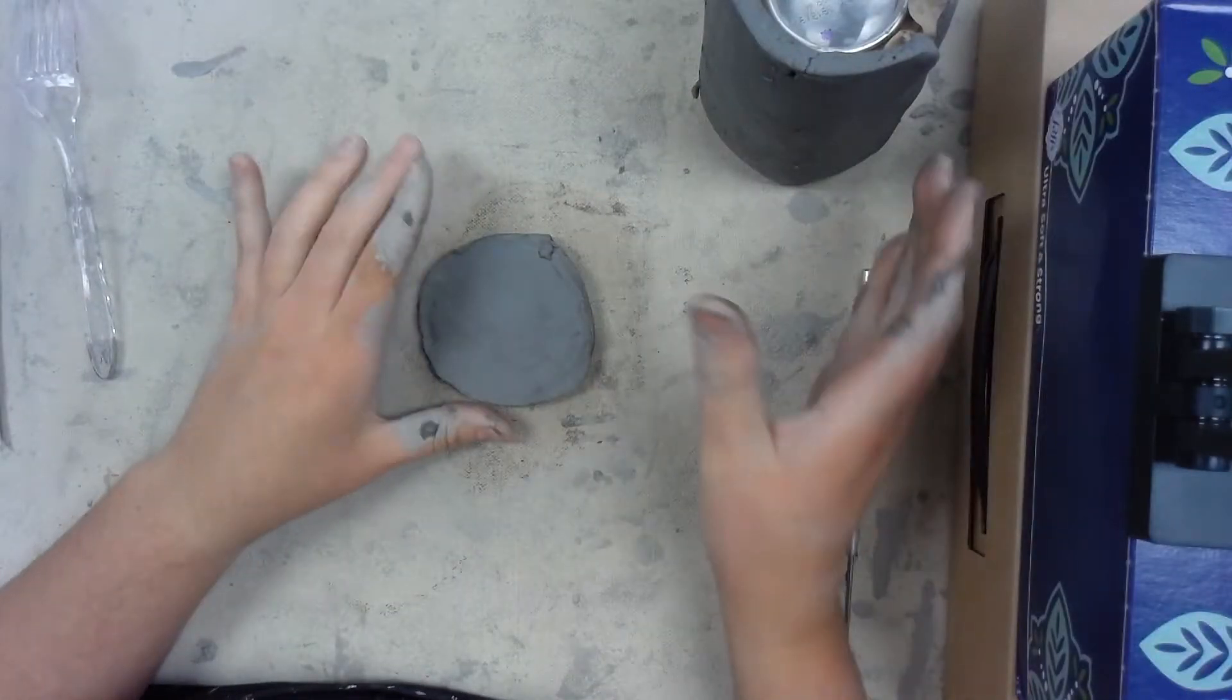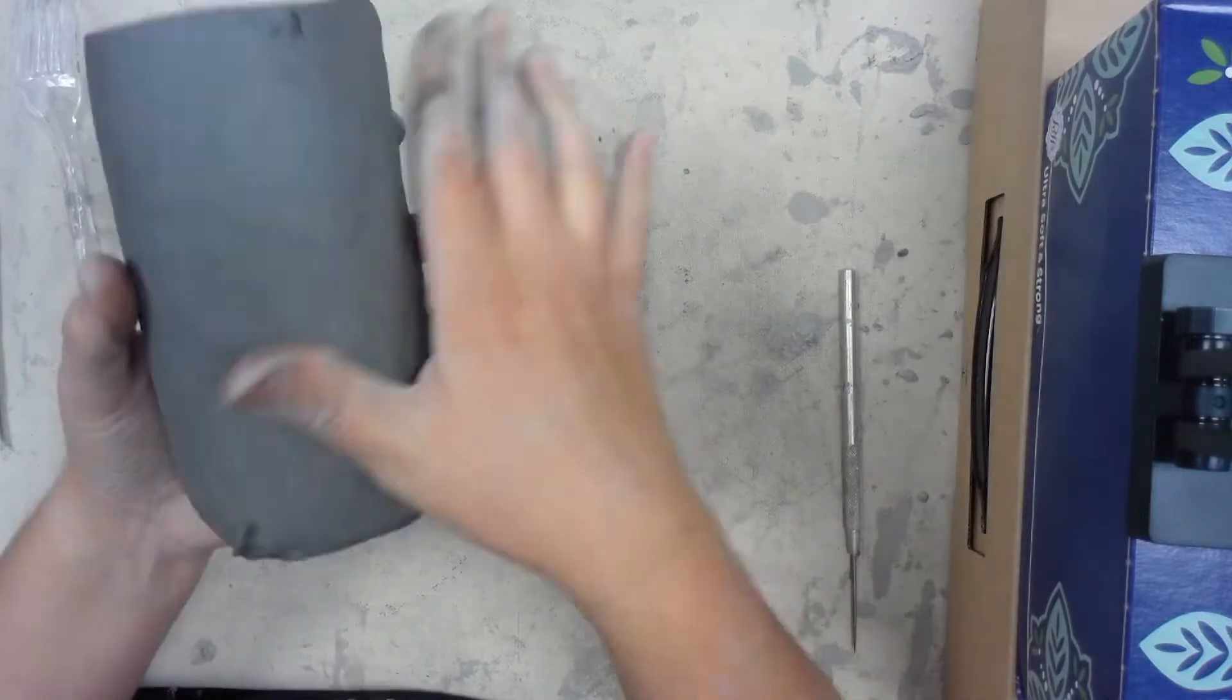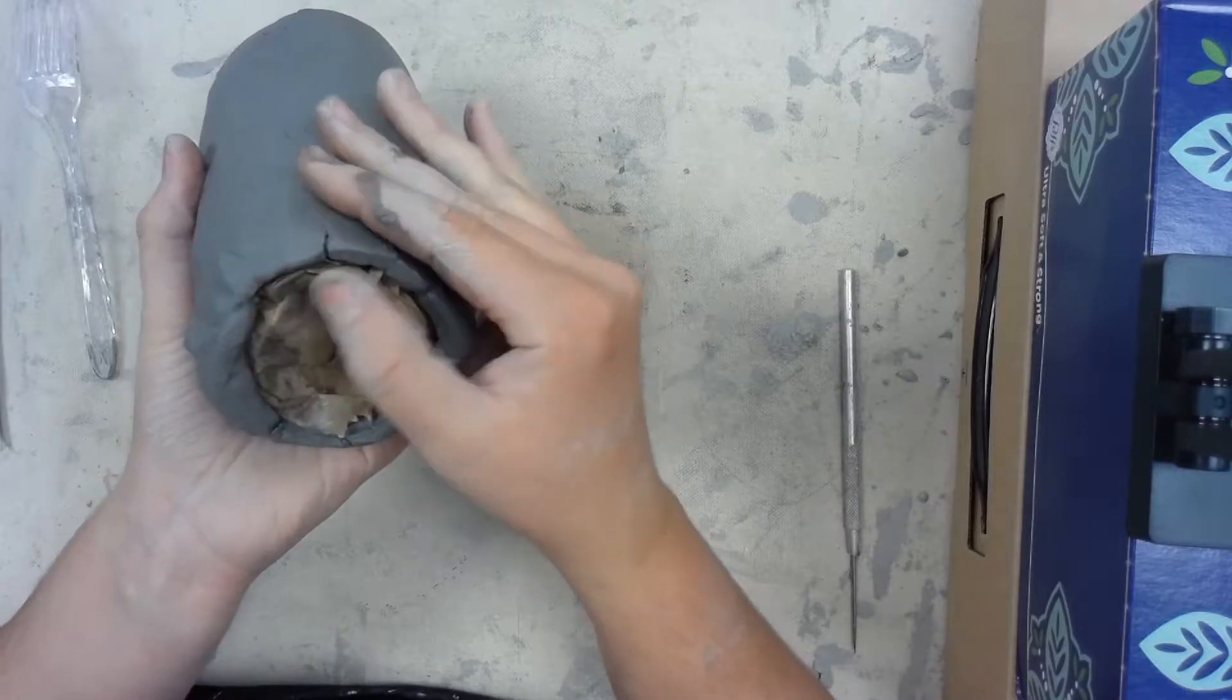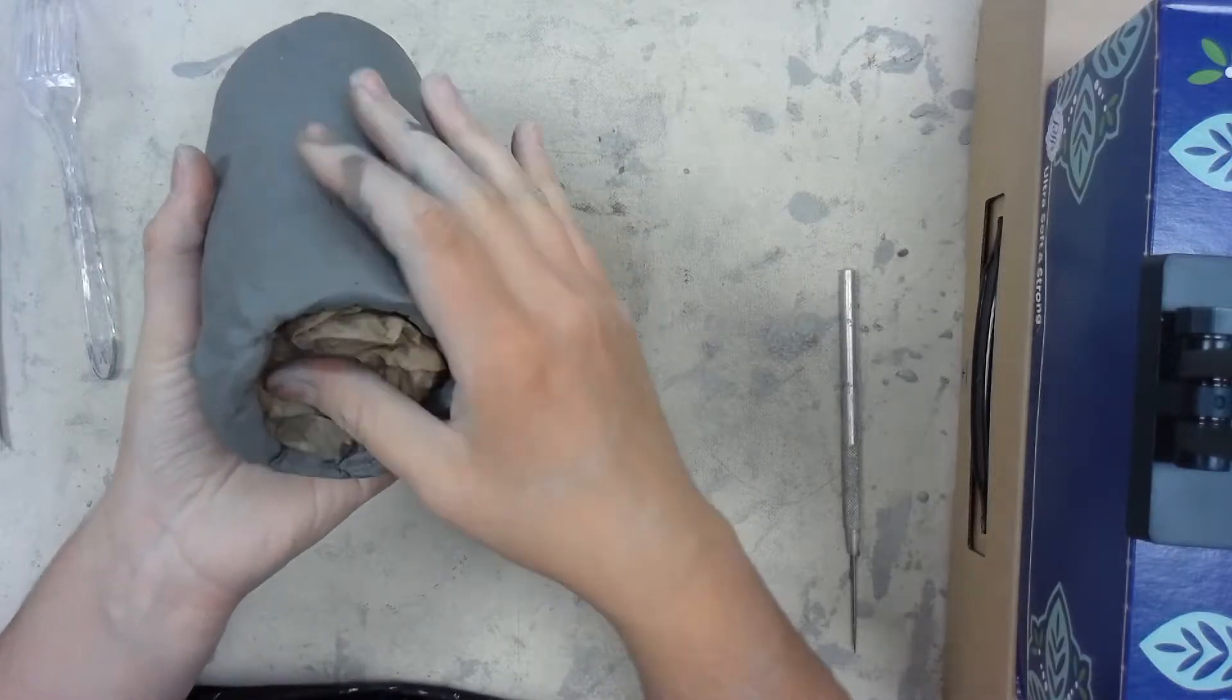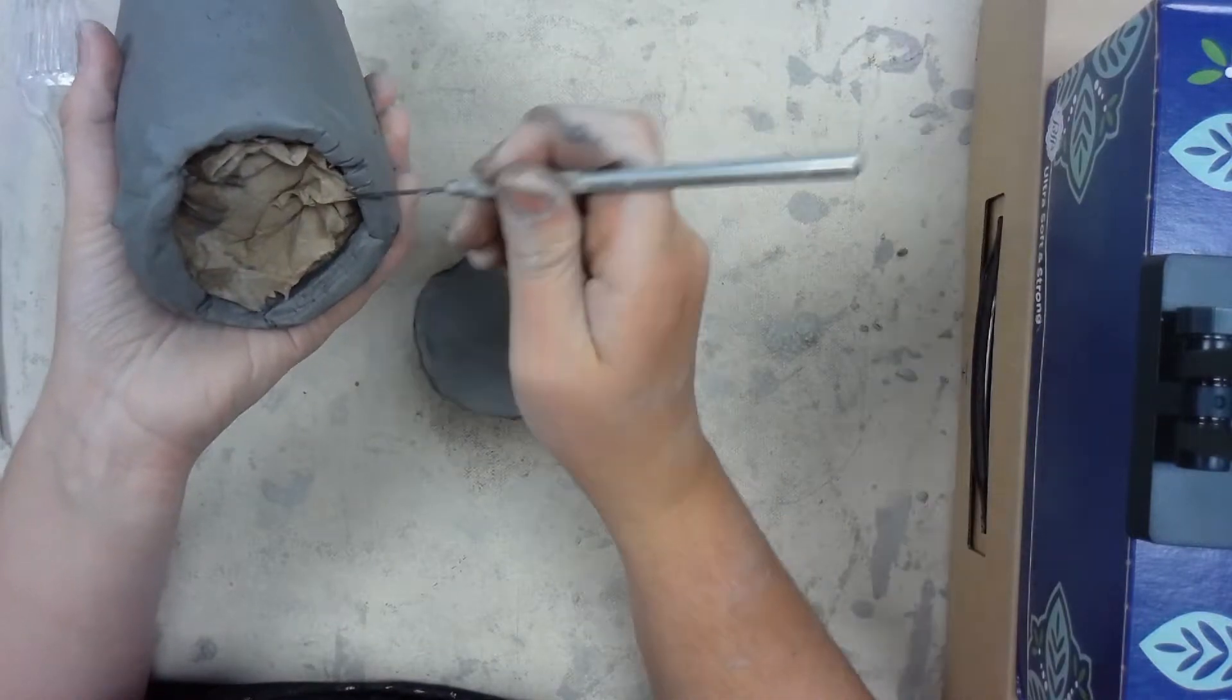Now I got my bottom of my mug made, now I just need to attach it. Just like when we were fixing the edge right here, we're going to take our needle tool or your fork, whatever one you like to use, and you're going to make a lot of grooves on the bottom.